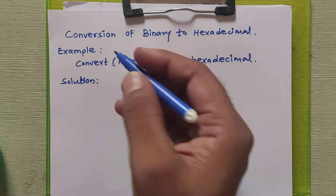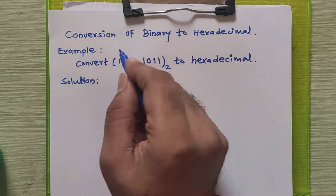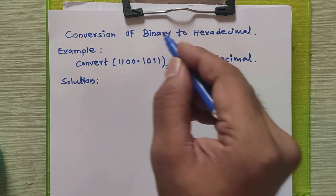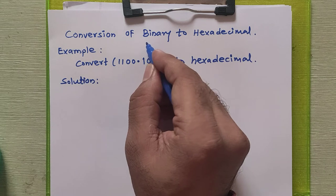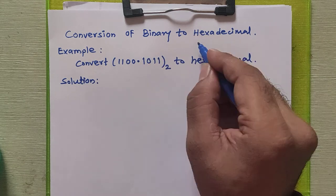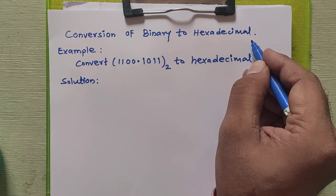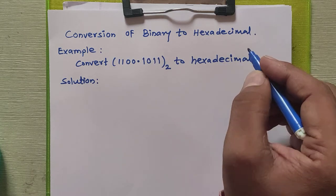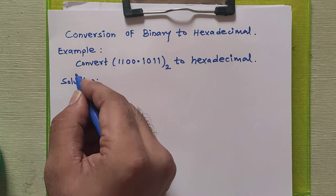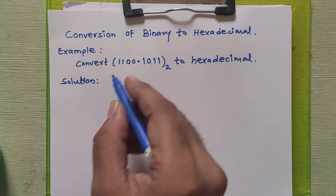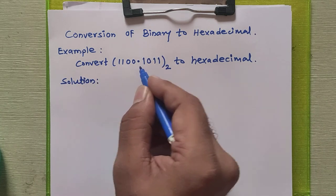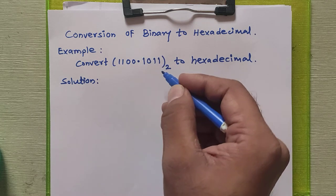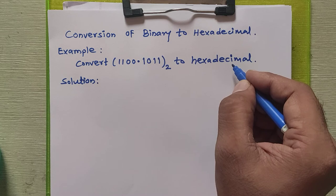In this tutorial we are going to study how to convert any binary number to hexadecimal number. The base of binary number is 2 whereas the base of hexadecimal number is 16, so we are going to convert a base 2 number to a base 16 number. The example given to us is the number 1100.1011 in binary, which we are going to convert into a hexadecimal number.